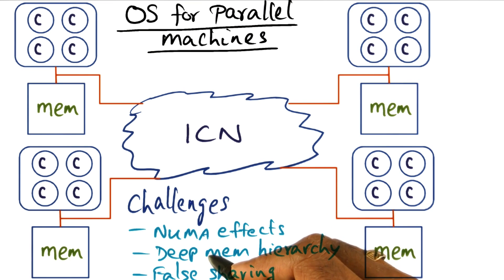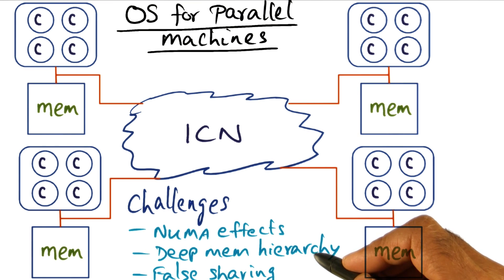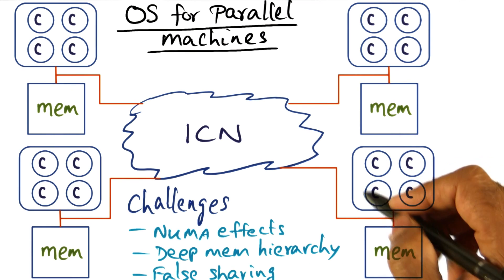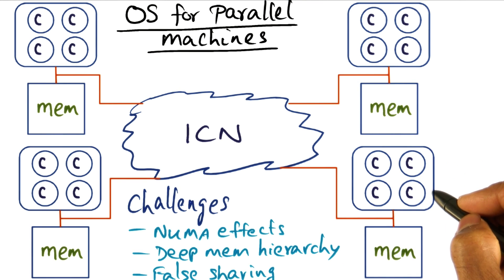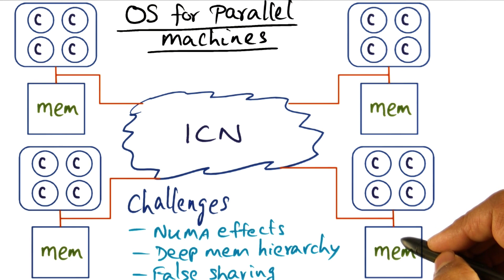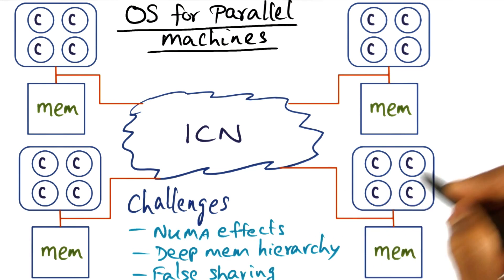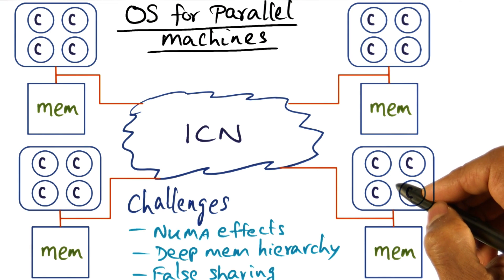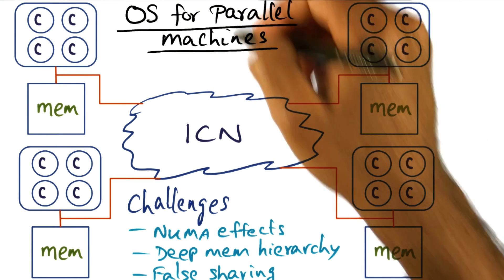In addition to the NUMA effect, there is also the memory hierarchy itself is very deep. We already talked about the fact that a single processor these days contains multiple levels of caches before it goes to the memory. And this deep memory hierarchy is another thing that you have to worry about in building the operating system for a parallel machine.